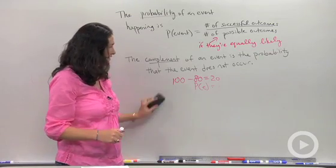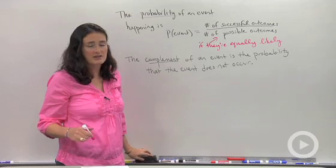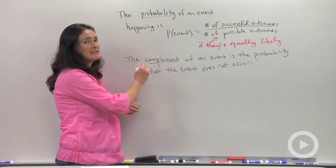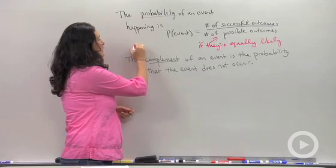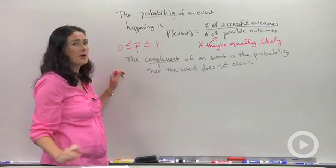The last thing I want you to think about before you do your homework problems is how you're going to write your answers. Probability should always come out as a number that's between 0 and 1. I'm going to write it like this. Probability should always be between 0 and 1.